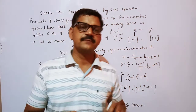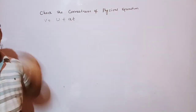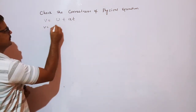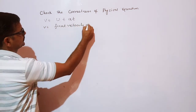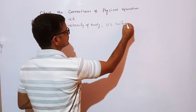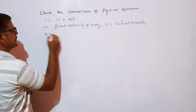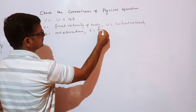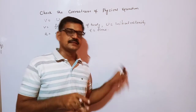Now let us take one more example to check the correctness of a physical equation. The equation is v equal to u plus at, which is the first equation of motion. Here, v is the final velocity of the body, u is the initial velocity of the body, a is the acceleration, and t is time. We follow the same steps as in the previous equation.